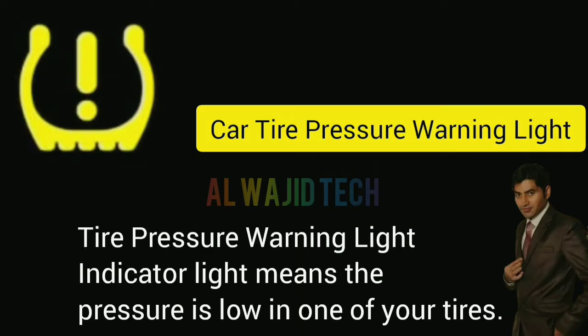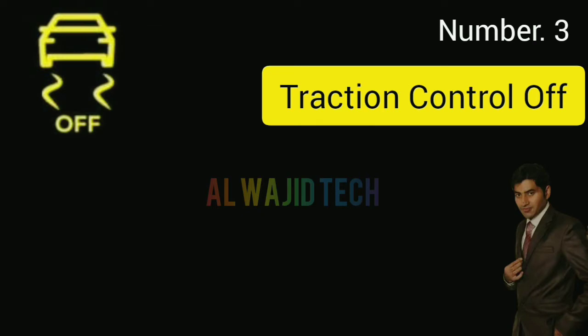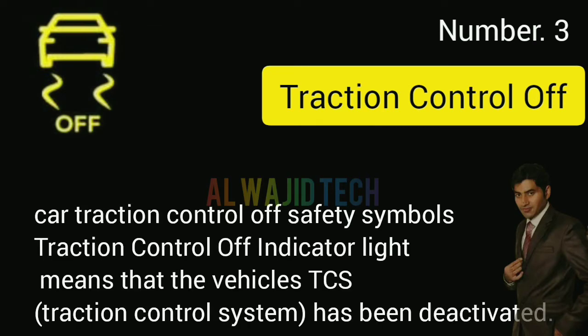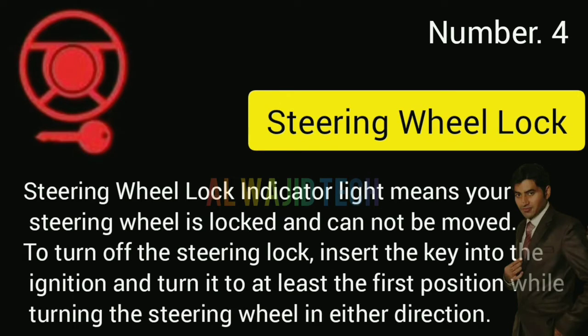Number two: Car tire pressure warning light. The tire pressure warning light indicator means the pressure is low in one of your tires. Number three: Traction control off. The traction control off indicator means that the vehicle's TCS has been deactivated.